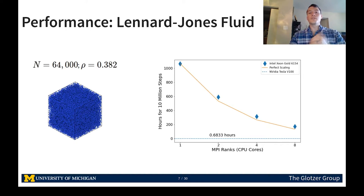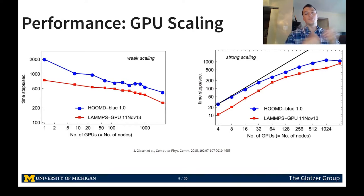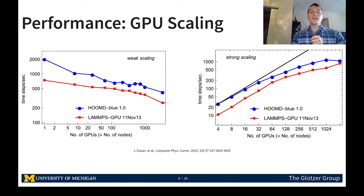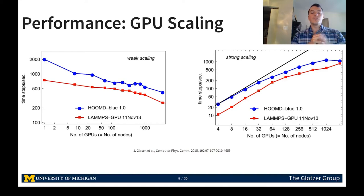The dotted blue line represents the performance of a single NVIDIA Tesla V100 GPU, which is over 100 times faster than eight cores on an Intel Xeon Gold processor. To back up the claim that HOOMD-Blue is performant across thousands of GPUs, we show weak and strong scaling figures from a 2015 paper. Both graphs go over a thousand GPUs, and in both strong and weak scaling we show good scaling. The X axis is number of GPUs and the Y axis is time steps per second, so higher is better.